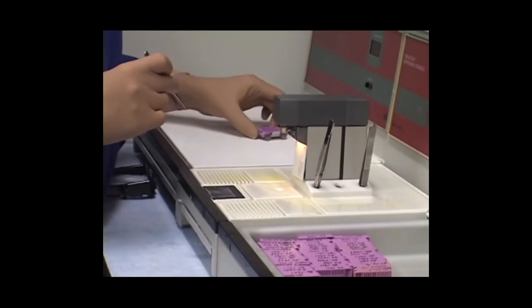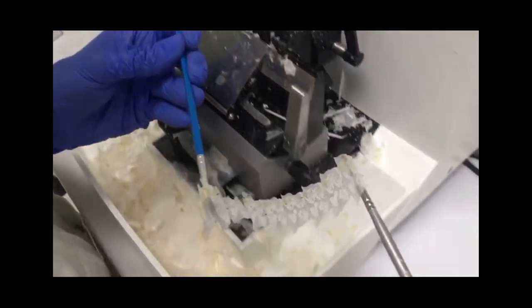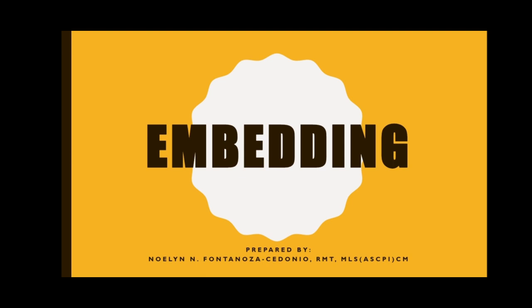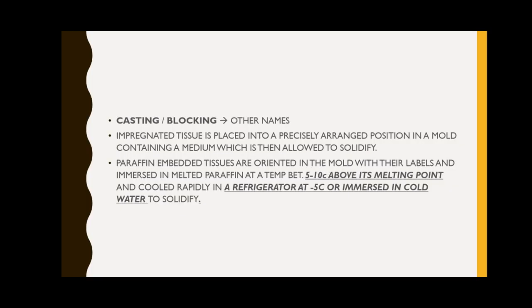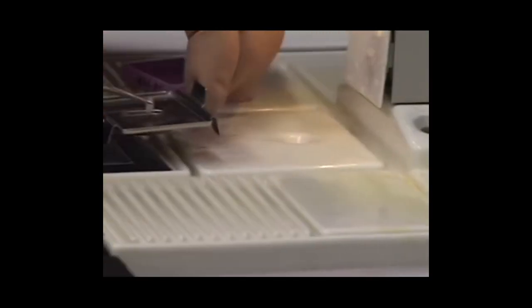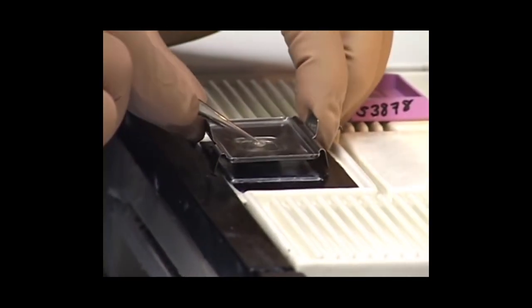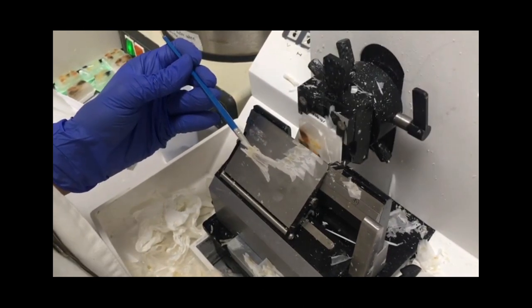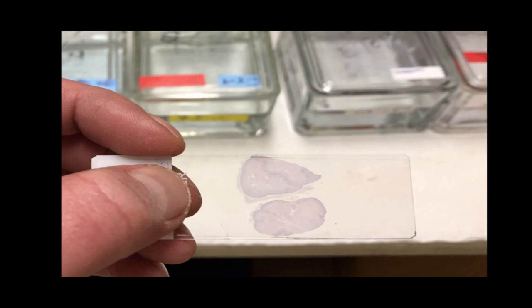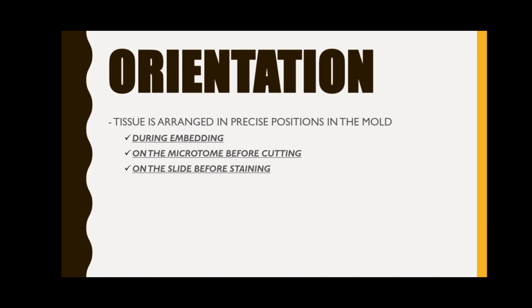Embedding, casting, or blocking is the process by which the impregnated tissue is placed into a precisely arranged position in a mold containing a medium which is then allowed to solidify. The process by which a tissue is arranged in precise positions in the mold during embedding, on the microtome before cutting, and on the slide before staining is known as orientation. Generally, the surface of the section to be cut should be placed parallel to the bottom of the mold. There are several types of blocking-out molds that can be purchased commercially.